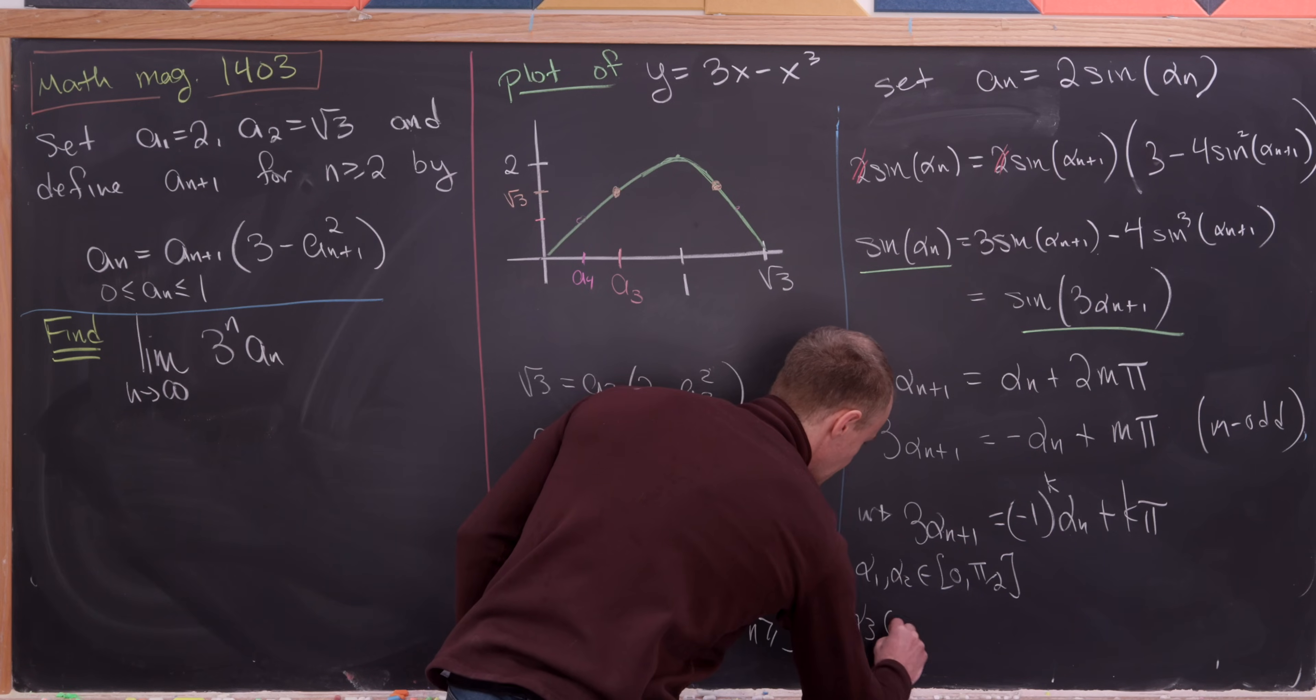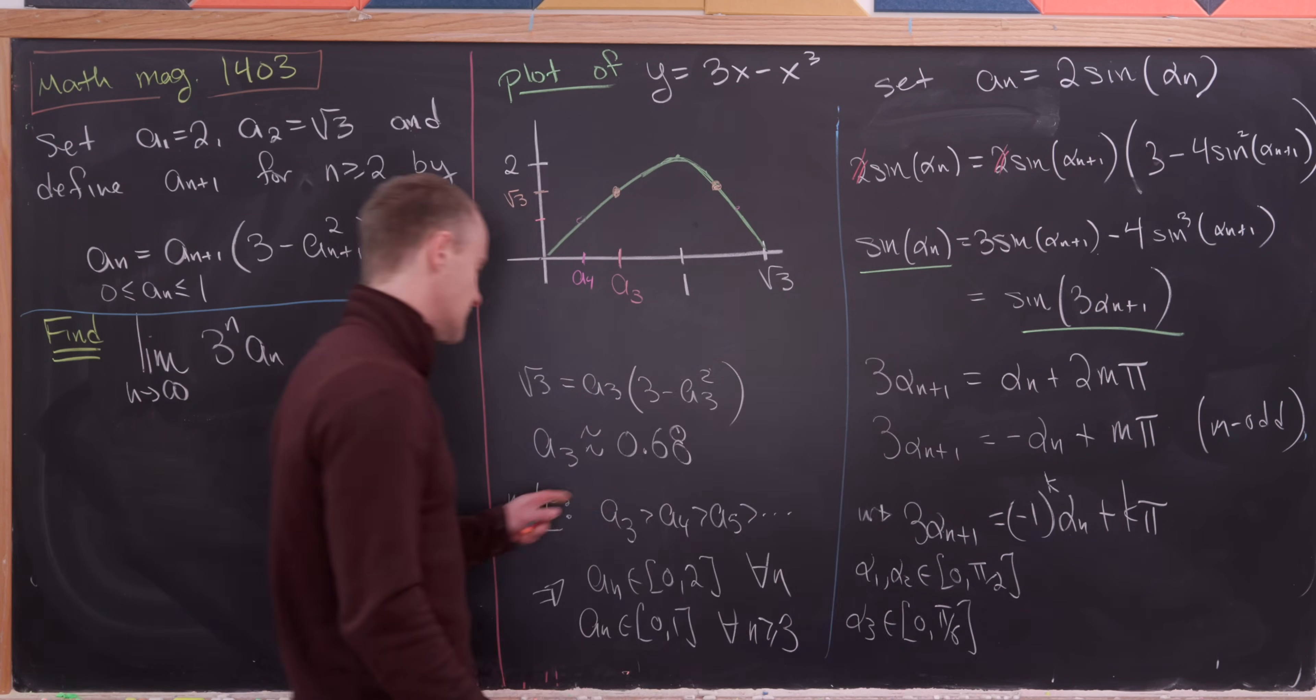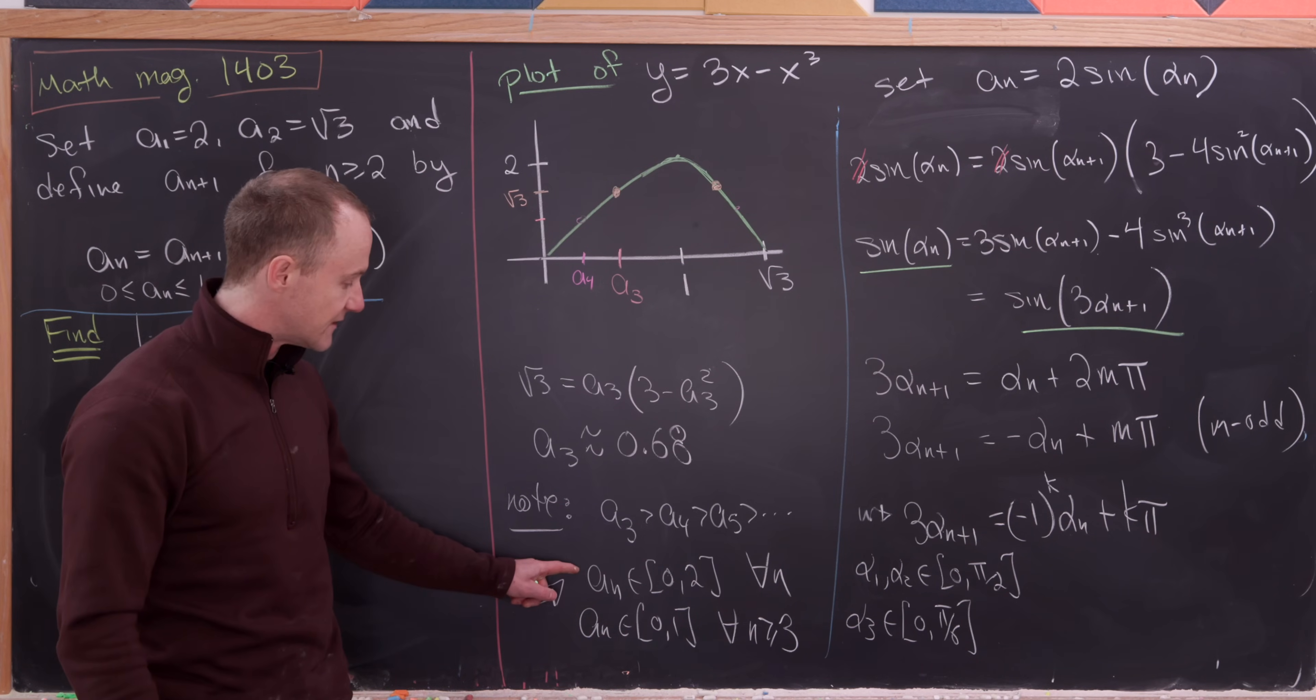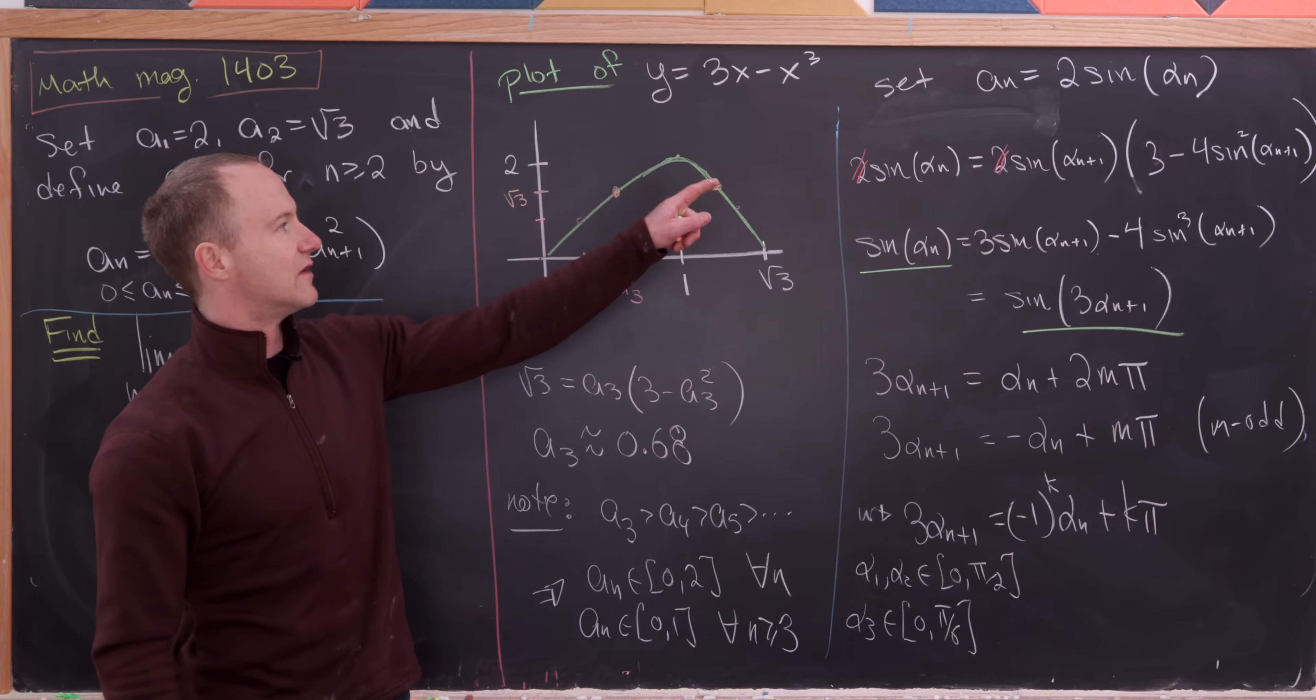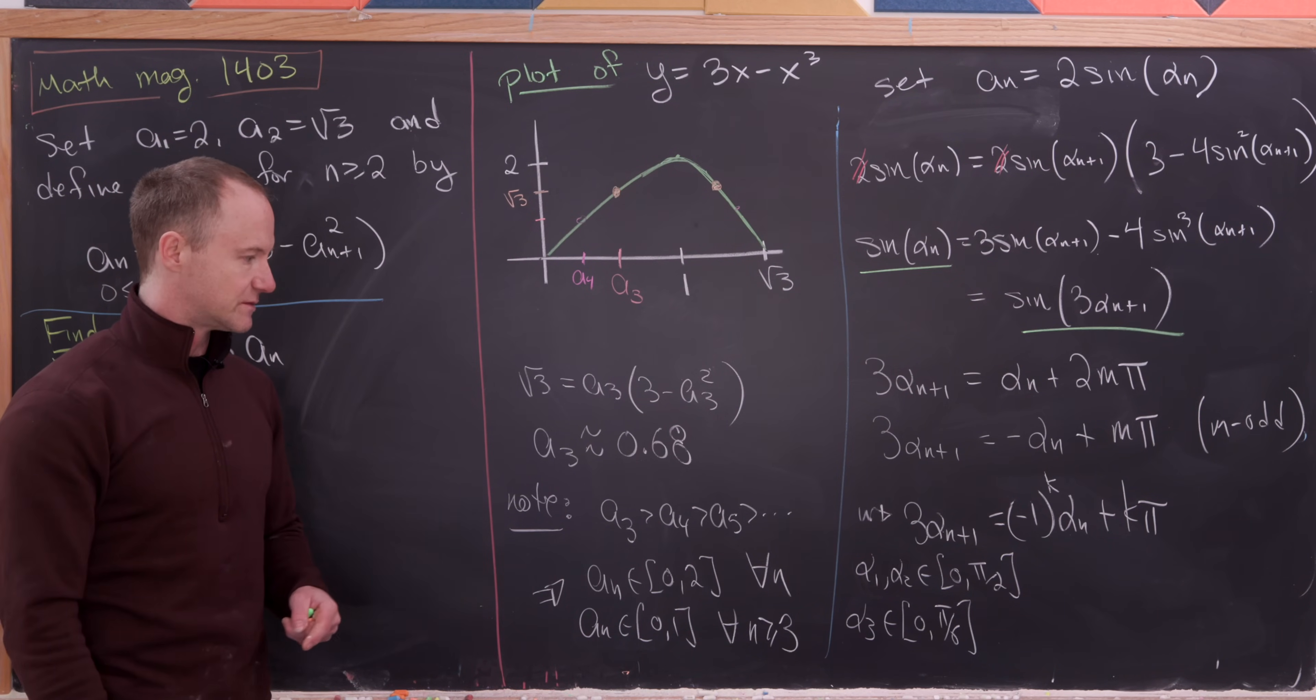And then alpha 3 can be chosen from 0 to pi over 6. And that's, again, to achieve these values of a sub n when we're putting them into the sine function.